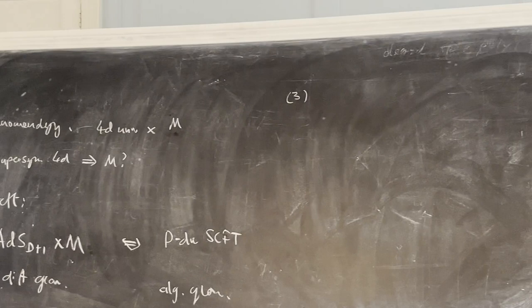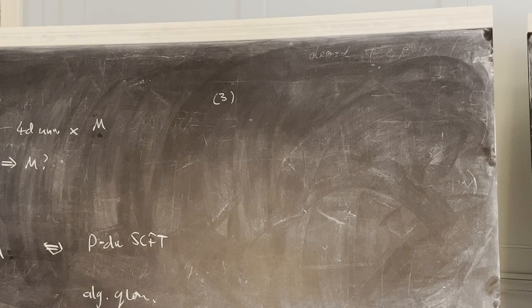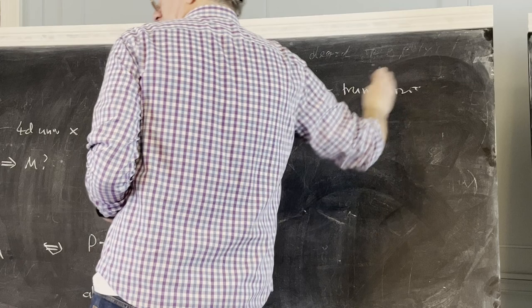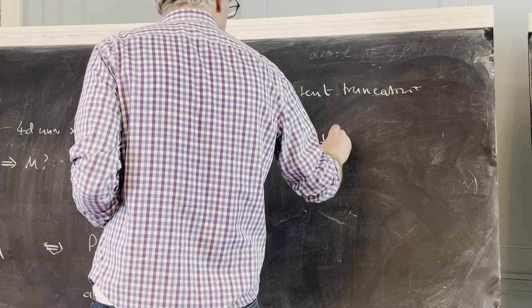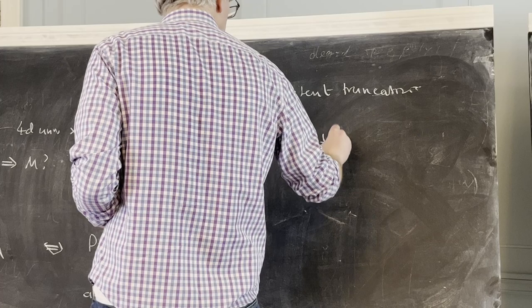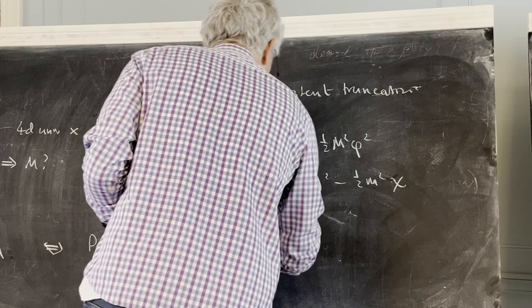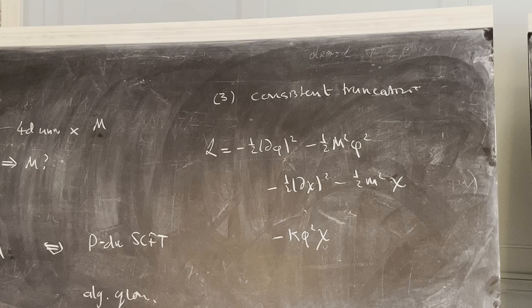And then the third thing I'm going to focus on is what are called consistent truncations. That's probably best explained by considering an example. Let's think about a really simple system which is just two fields, each with their own mass: a heavy field phi with mass M squared, and a light field chi with mass m squared, and let's suppose we had some cubic interaction which looks like kappa phi squared chi.